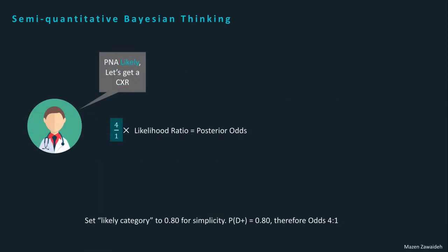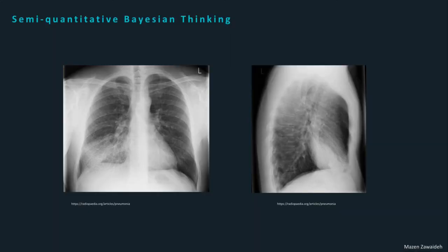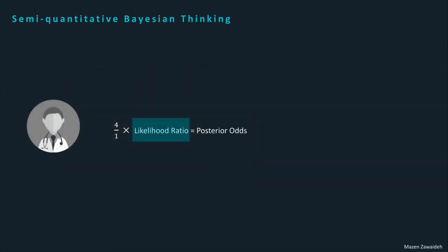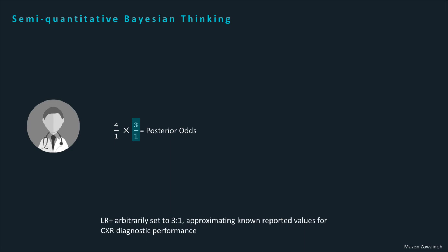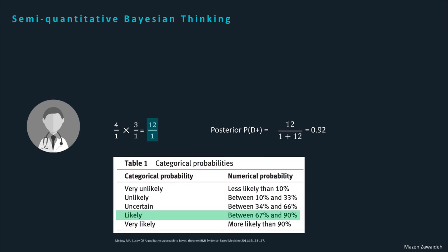Since Dr. A feels pneumonia is likely, this is an appropriate situation to obtain a diagnostic test. A chest x-ray is ordered and the results are positive. How does this influence Dr. A's belief? We quantify the change in belief using the likelihood ratio: we multiply the prior odds by the likelihood ratio to obtain our posterior odds, then express this in terms of a posterior probability. The results of the chest x-ray have moved our belief about the presence of disease to the next more likely category — very likely.